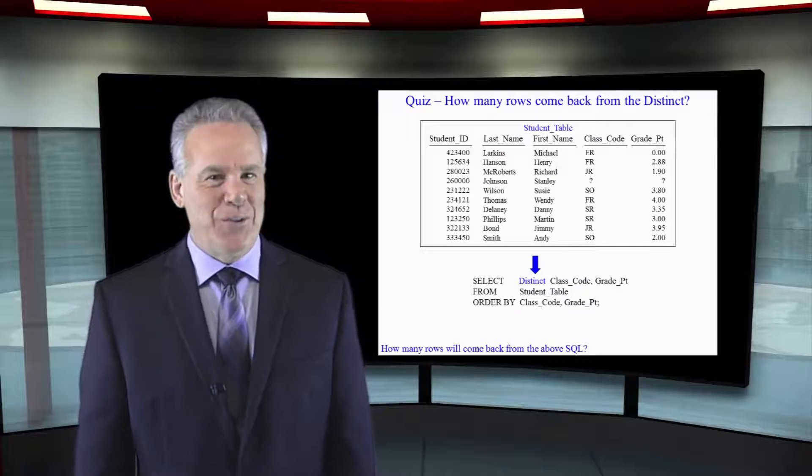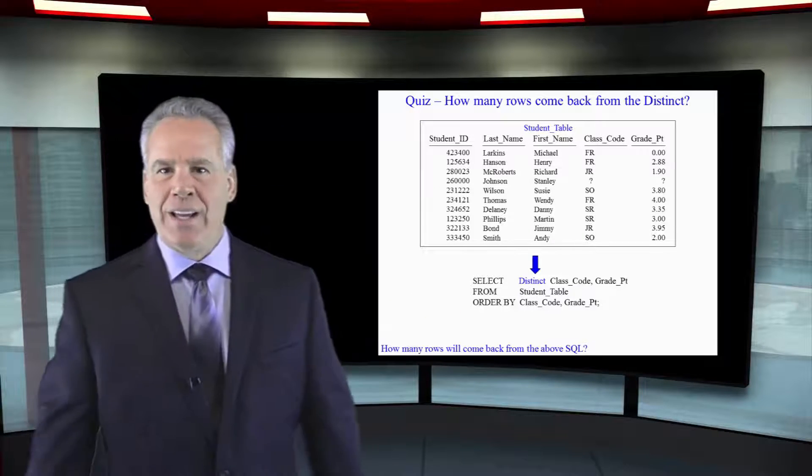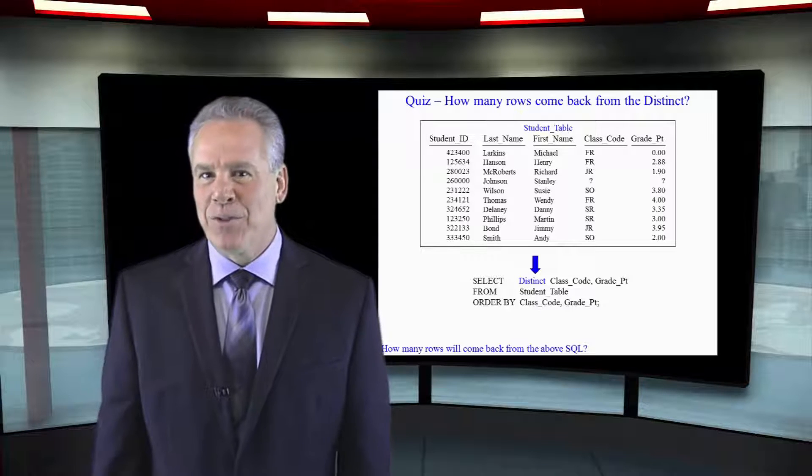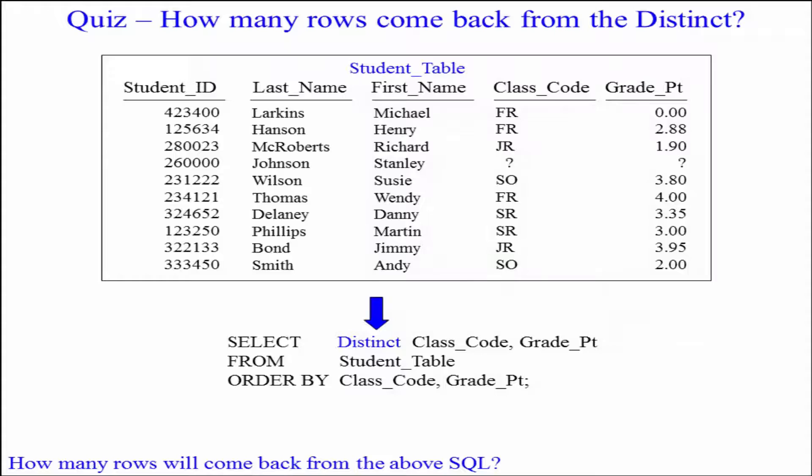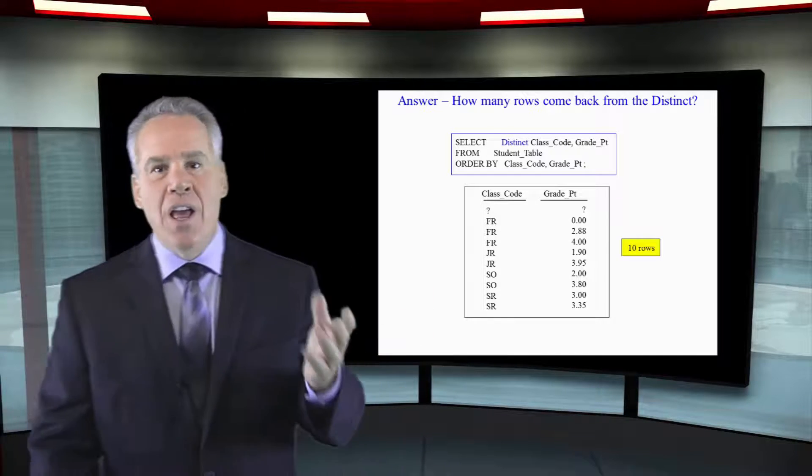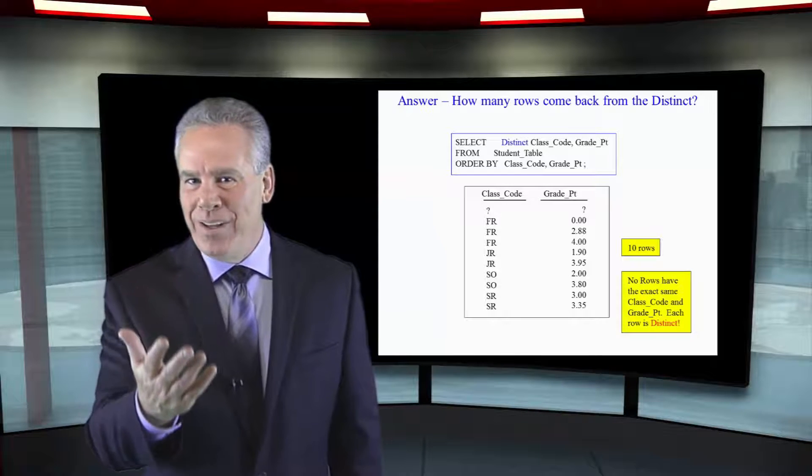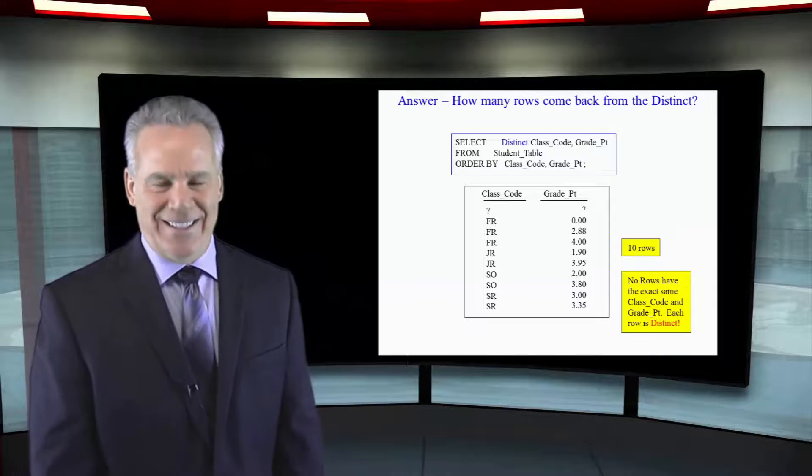There are ten rows in this student table. It's time to test yourself. I've got a question for you. Look at this query: select distinct class code comma grade point from student table. How many rows are coming back? Good for you. There were ten rows coming back because there were no class codes and grade points that combined together matched perfectly. So all ten rows came back in that distinct statement.